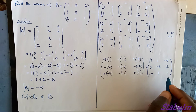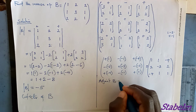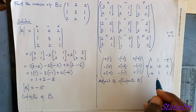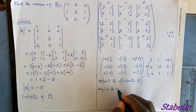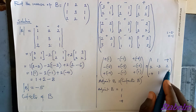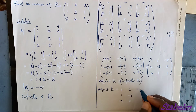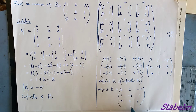Since the adjoint of B equals the transpose of the cofactor of B, rows become columns. The first row [1, 1, −4] becomes the first column, the second row [2, −3, 2] becomes the second column, and the third row [−4, 1, 1] becomes the third column. So adjoint of B = [1, 2, −4; 1, −3, 1; −4, 2, 1].